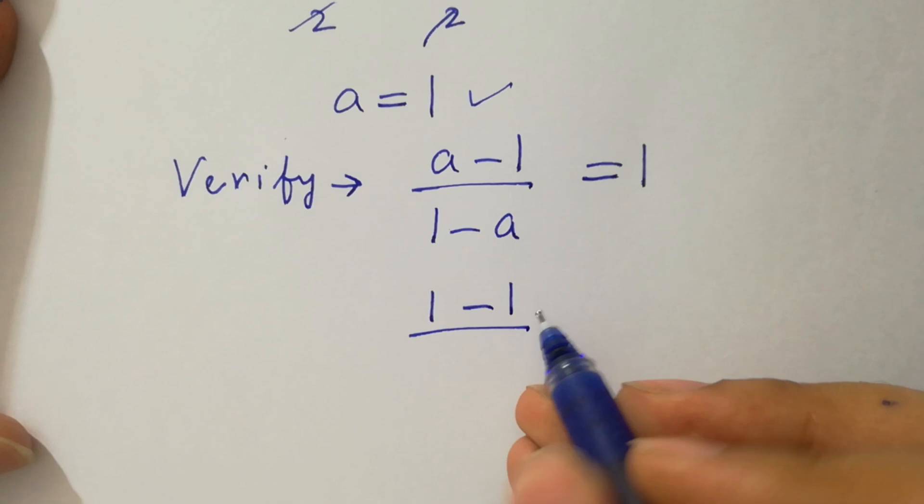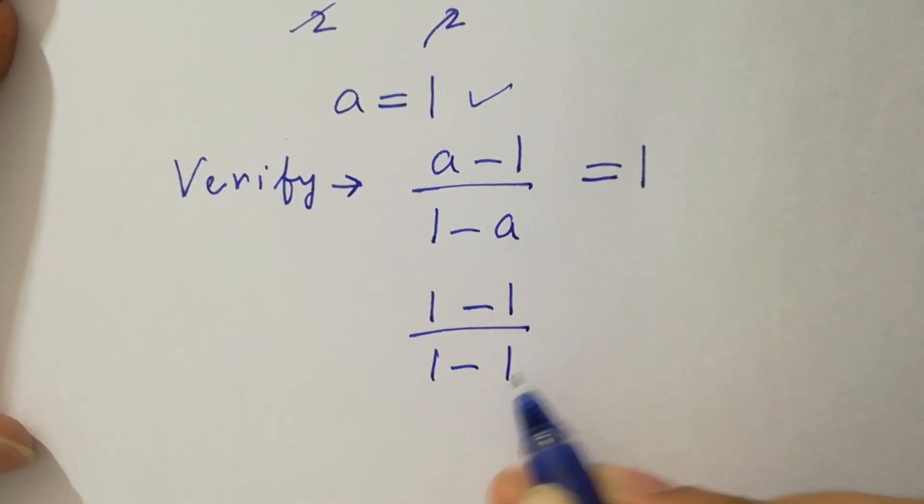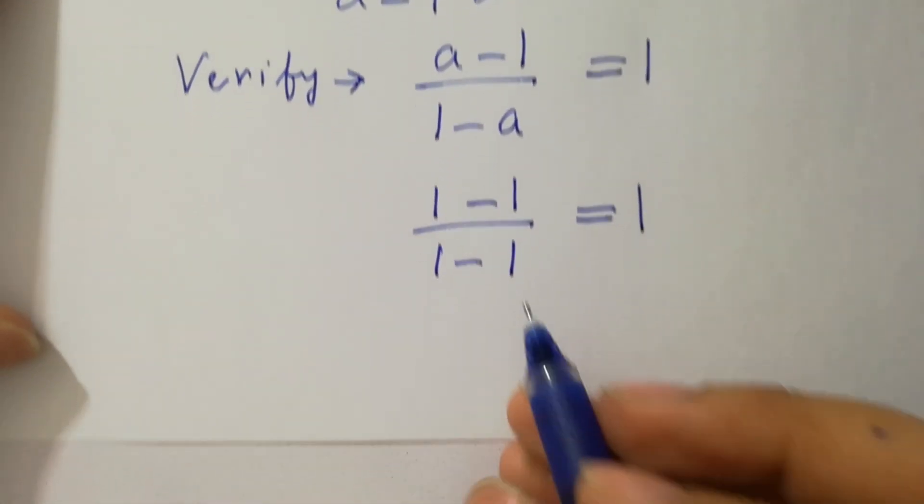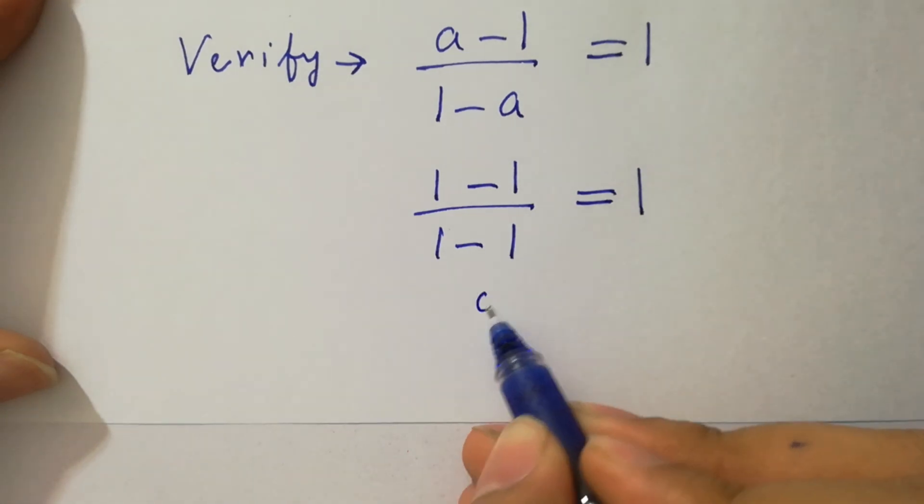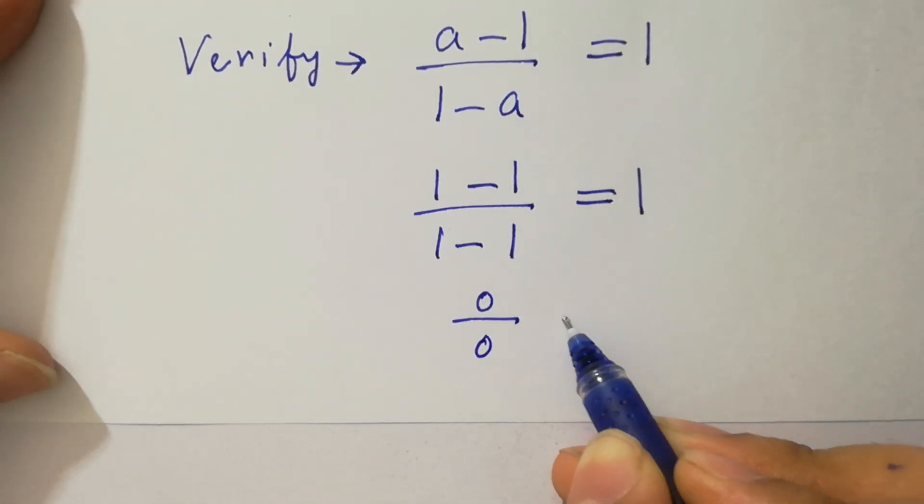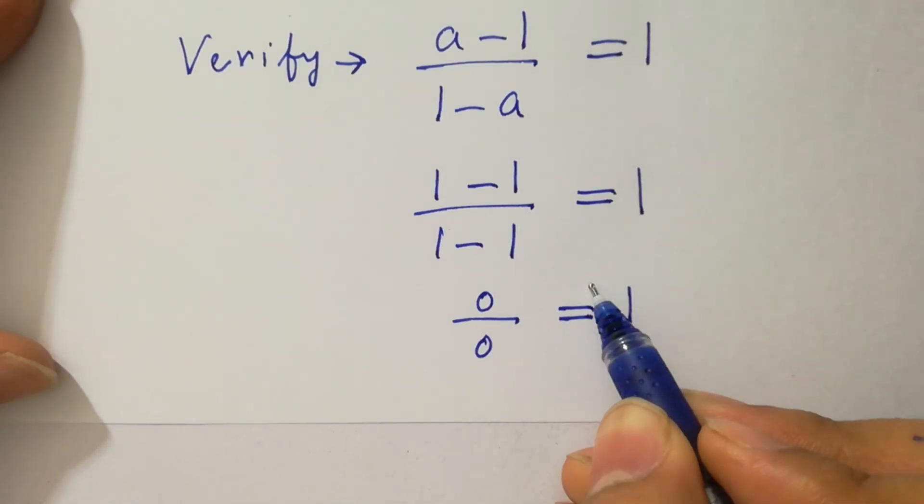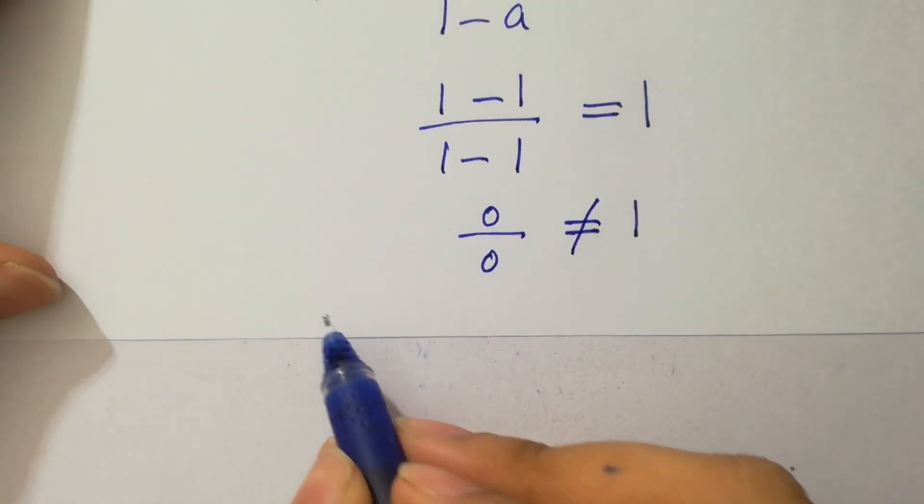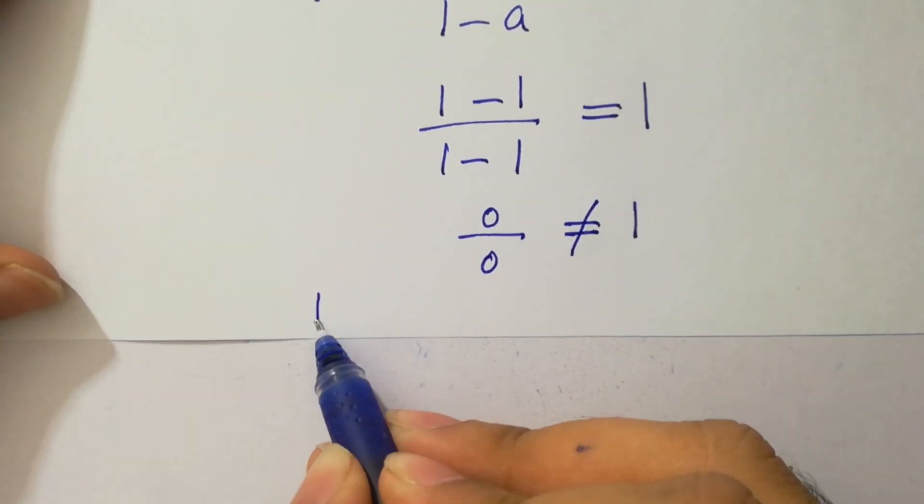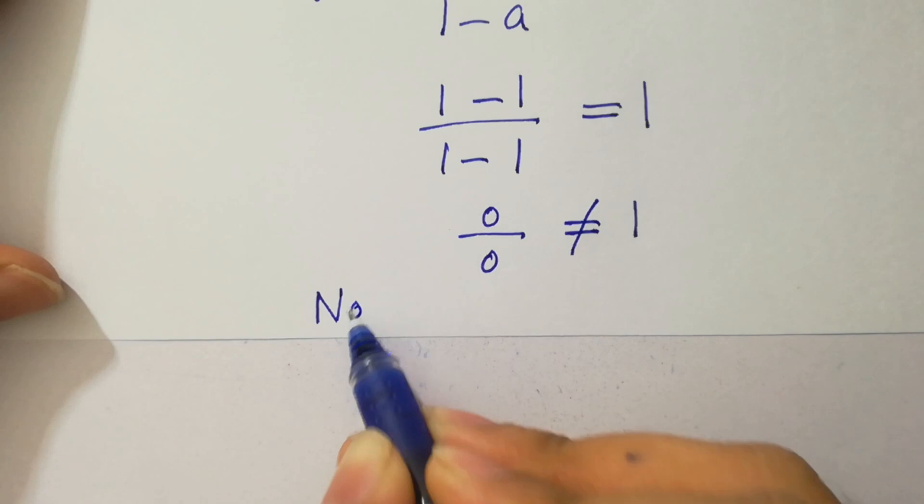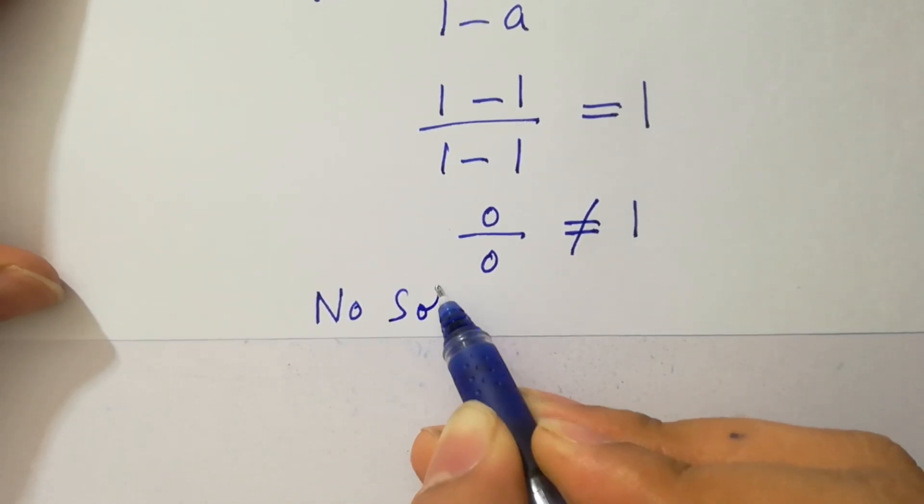Over 1-1 equals 1. So 1-1 is 0, over 1-1 is 0, equals 1. Where 0/0, which is an undefined form, does not equal 1. This shows that this problem has no solution.